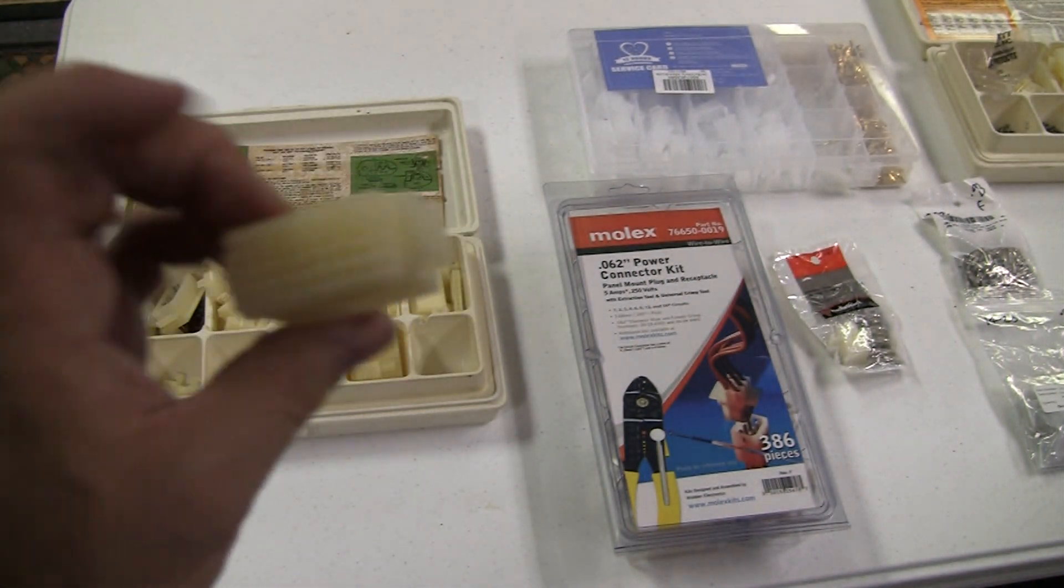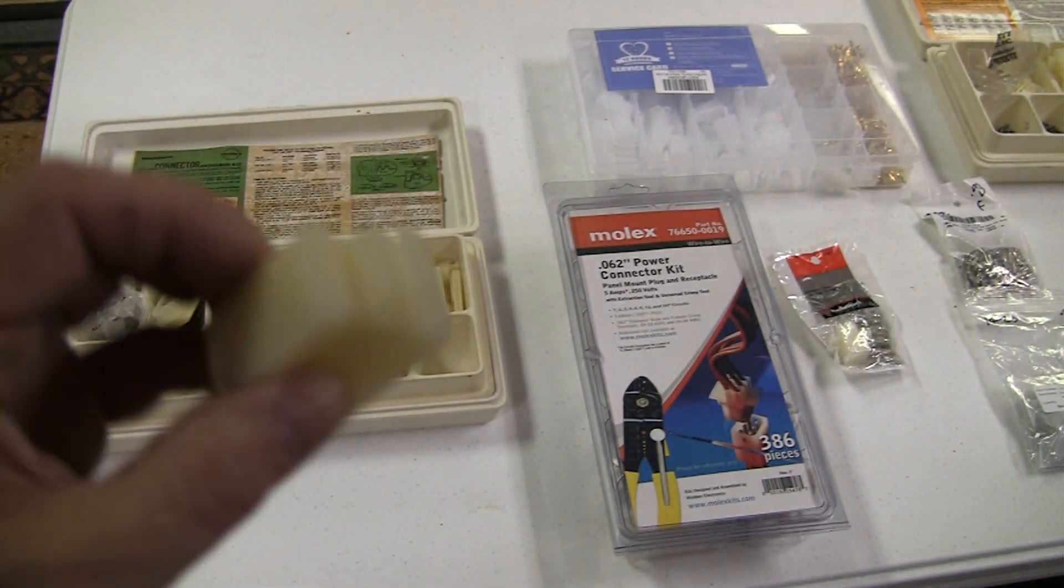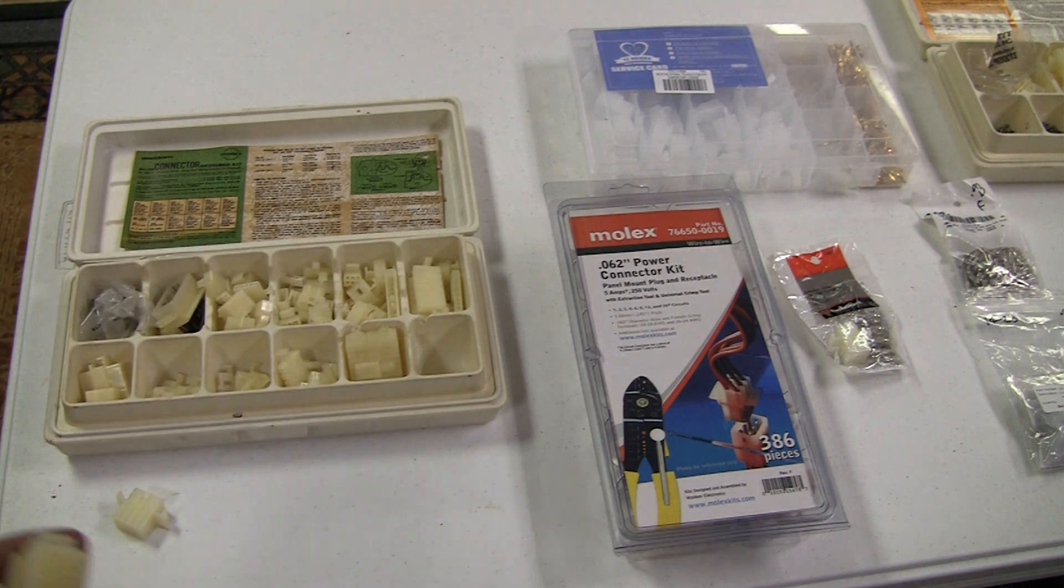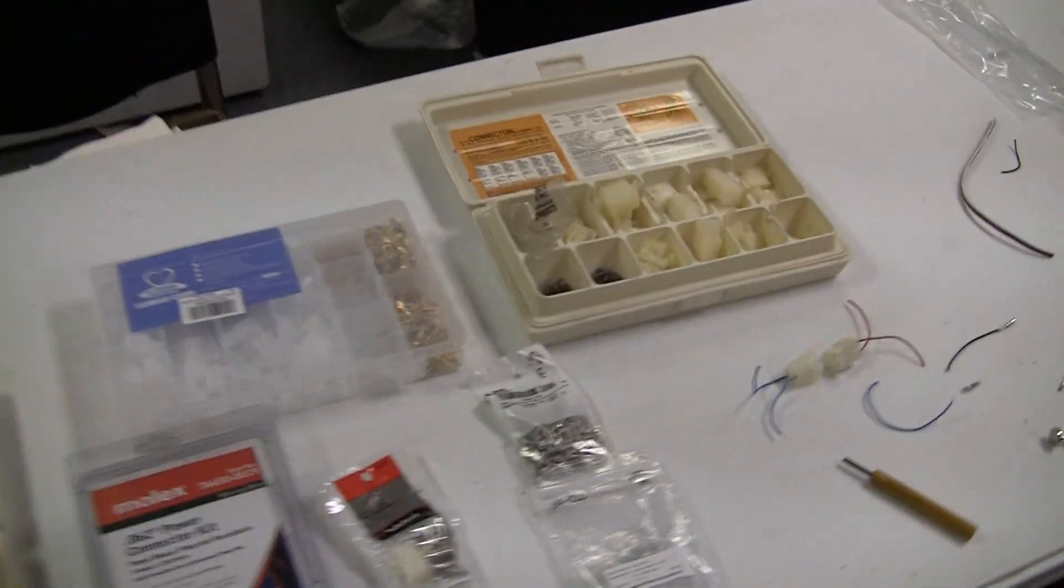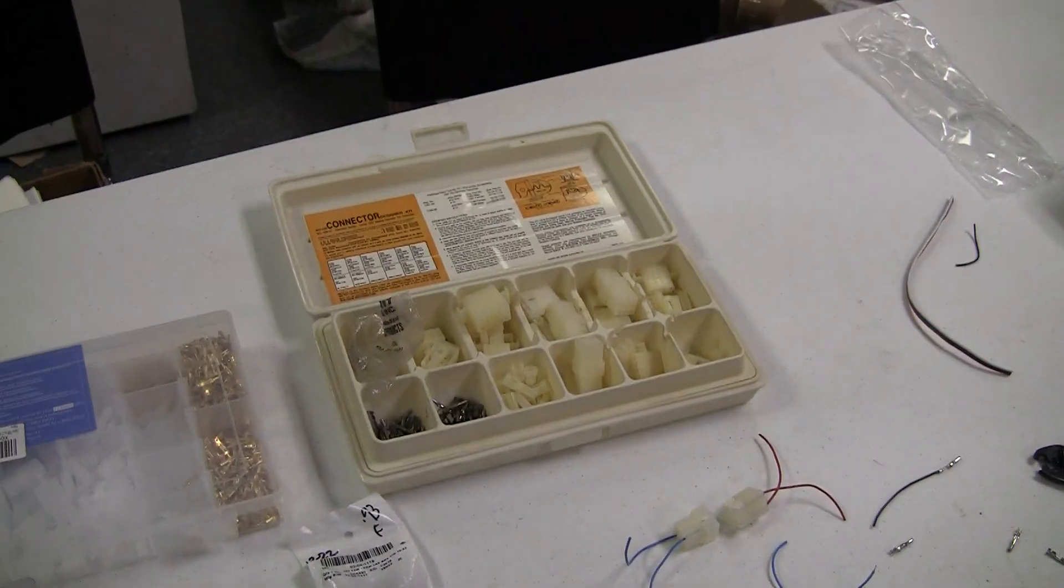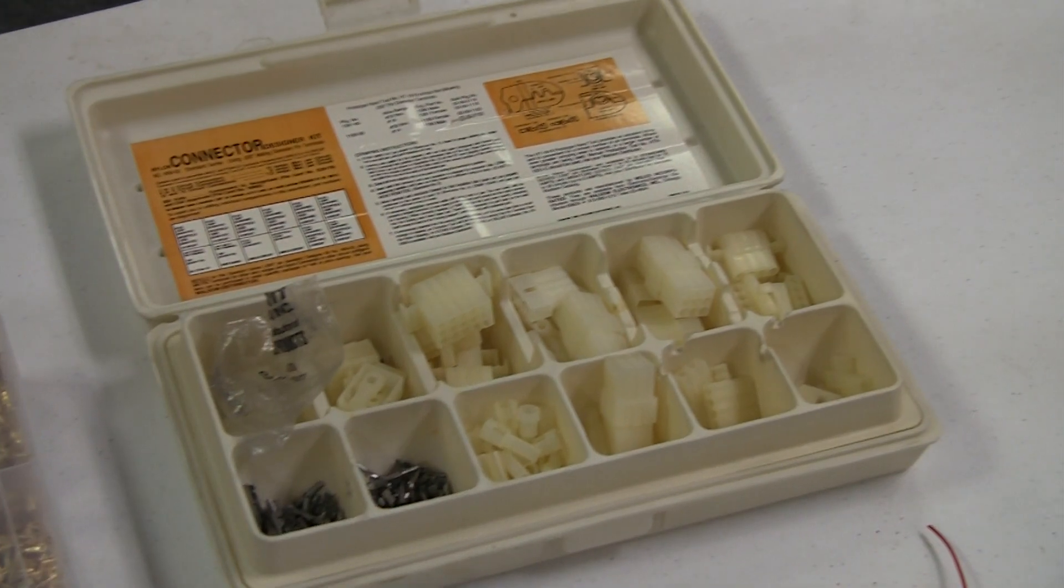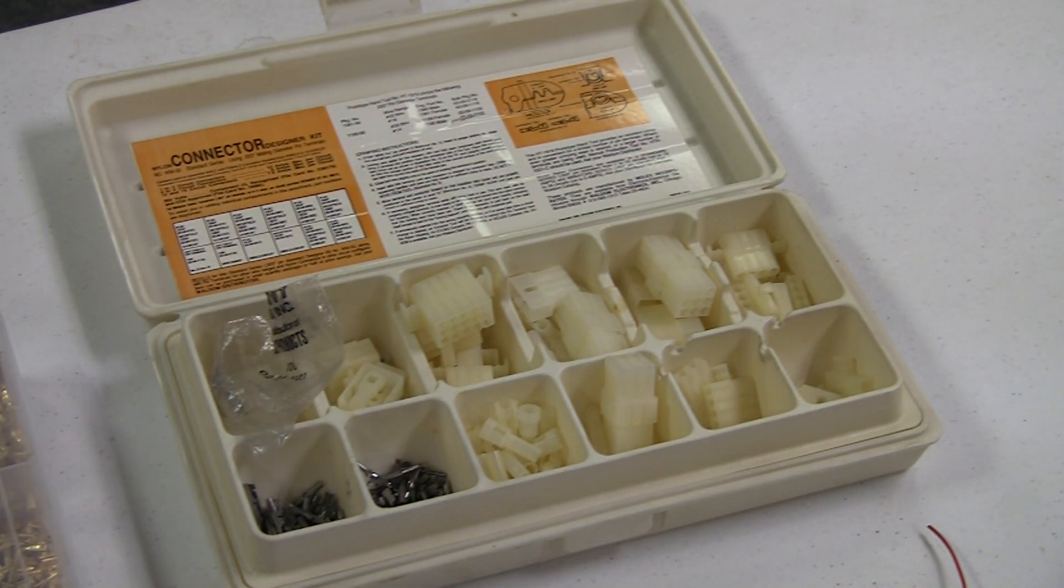There's the smaller ones, 0.062s. You may run into these, but it's more often that you're going to run into the slightly larger one, which is the 0.093. And there's an example of an older box of parts. They're basically the same, they're just slightly larger.